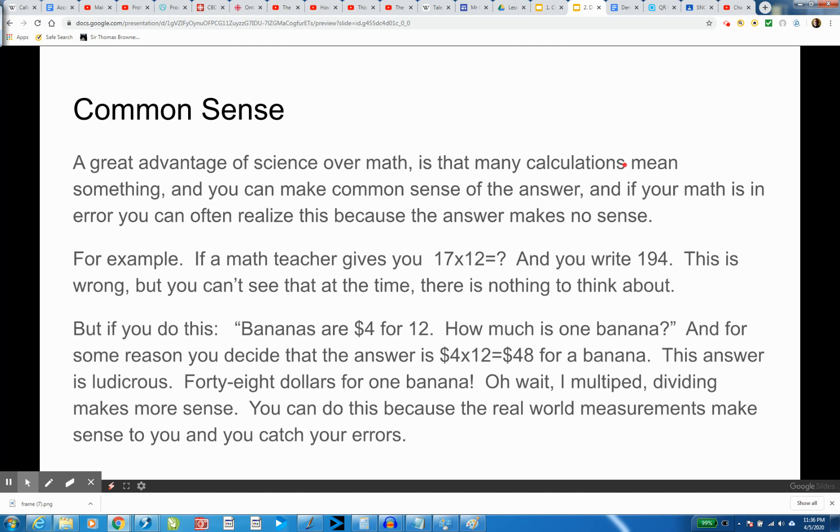Yet. So you suddenly go, oh wait a minute, I multiplied. Dividing makes more sense. There's just no freaking way. If $4 for 12 bananas, it's then...